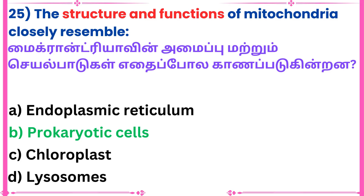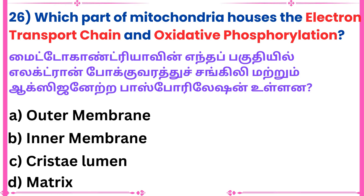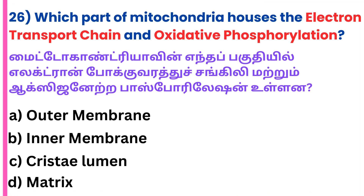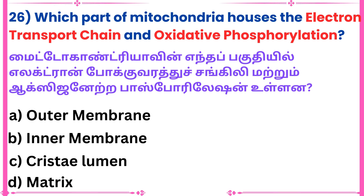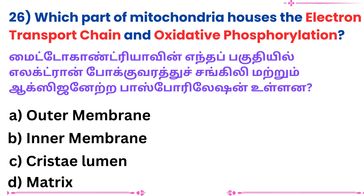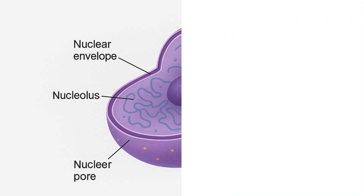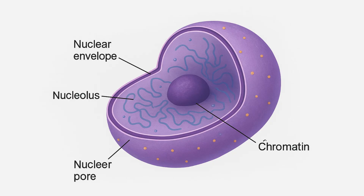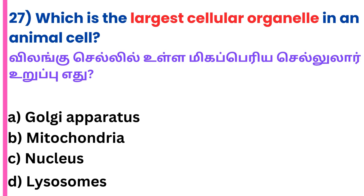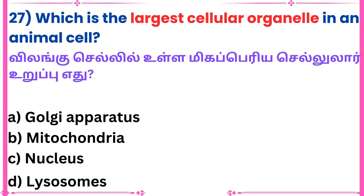Twenty-sixth question: Which part of mitochondria houses the electron transport chain and oxidative phosphorylation? Answer: Inner membrane.